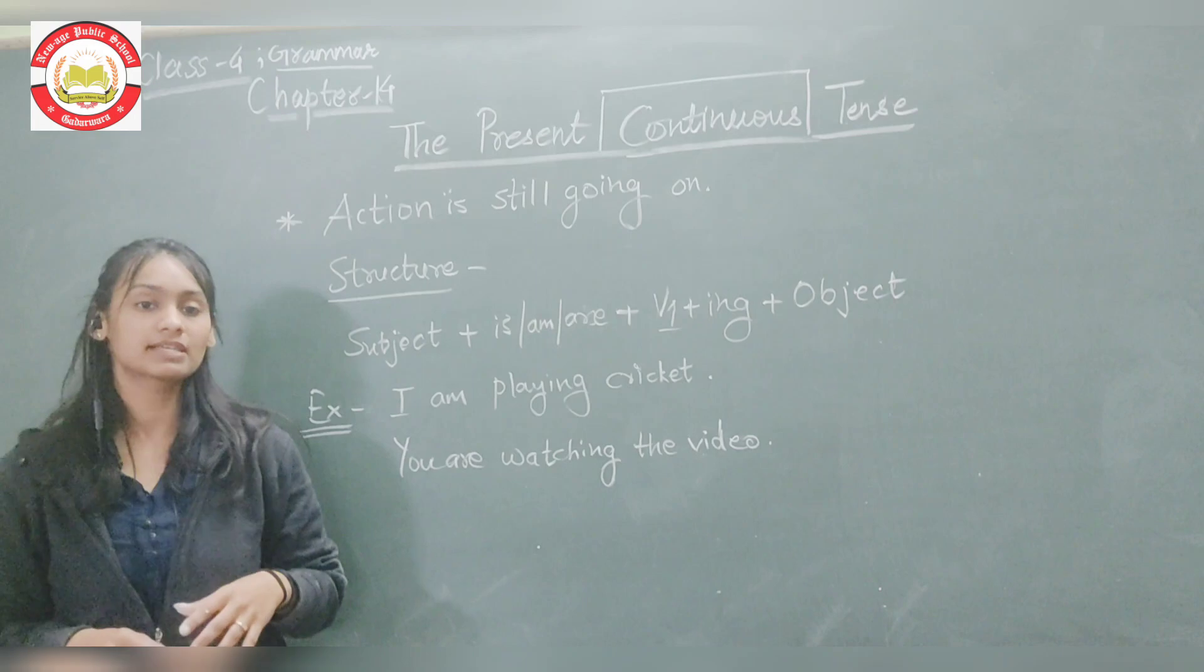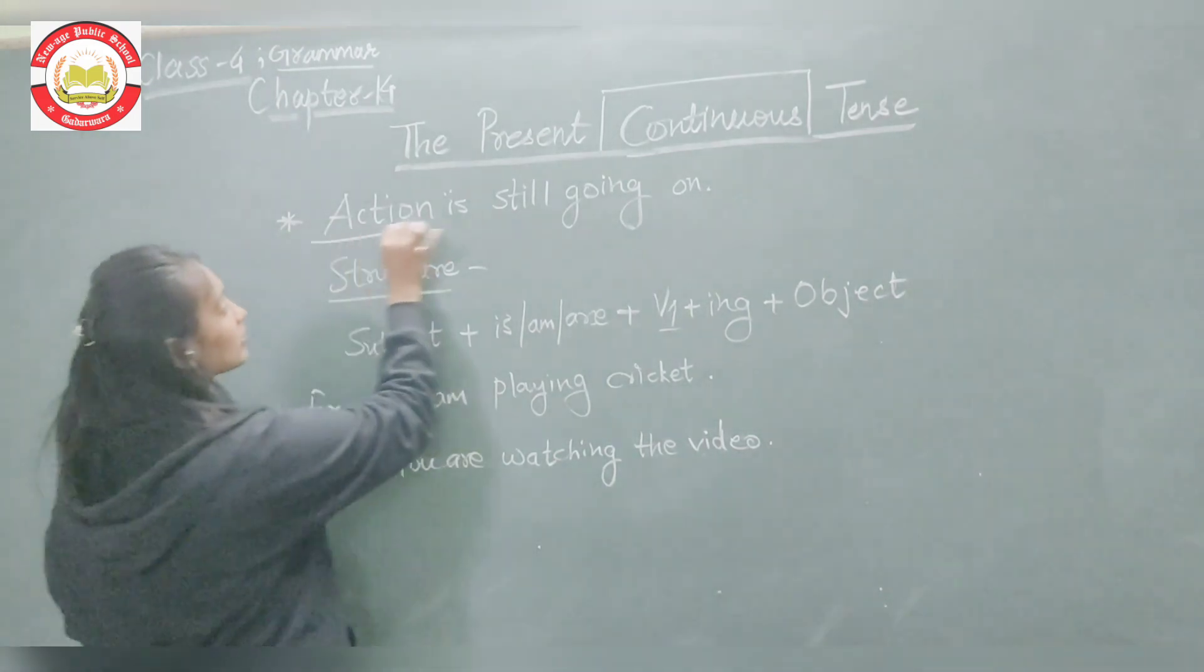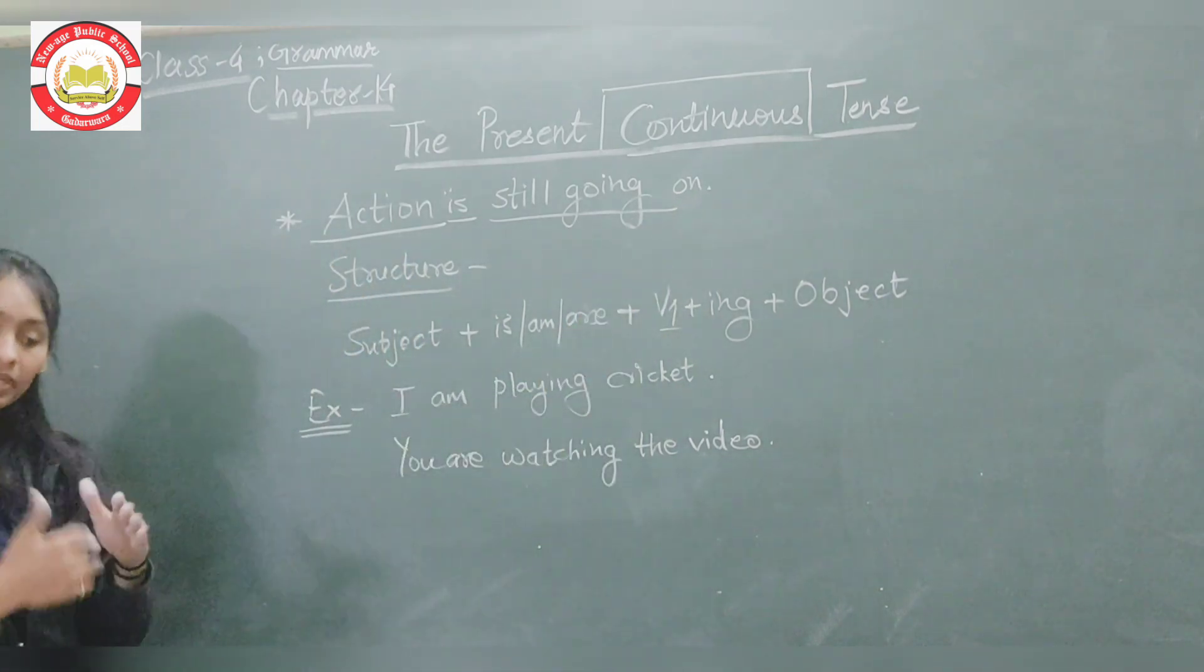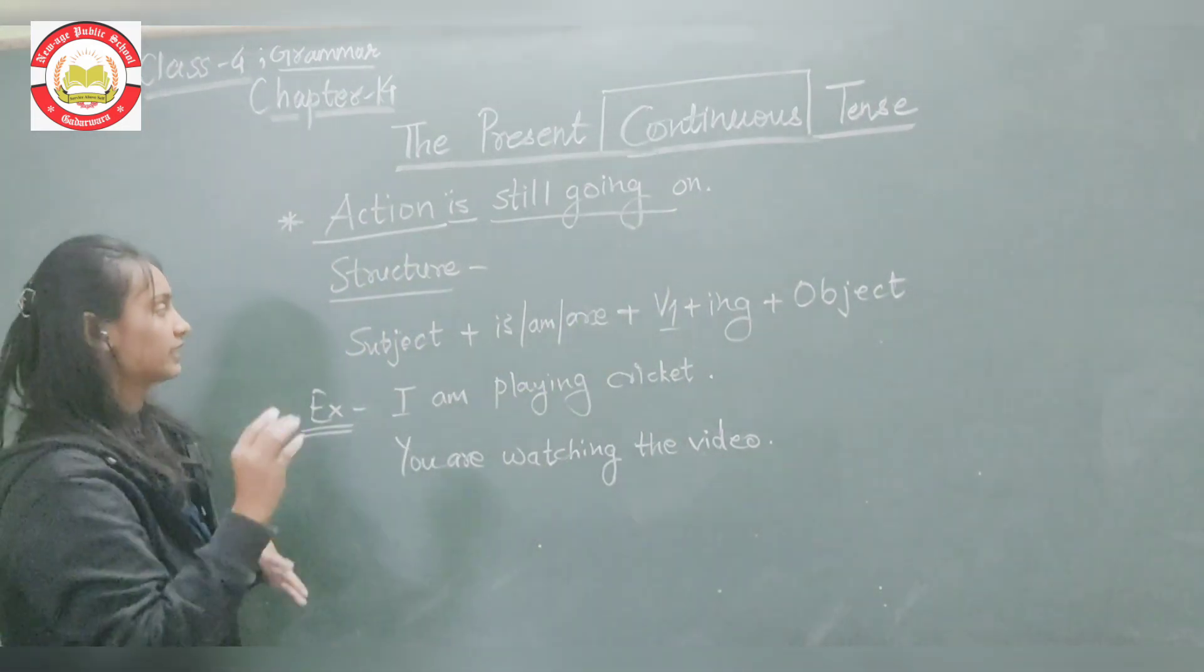Present Continuous Tense is used for actions which are still going on. Such actions which are happening right now, which are starting.